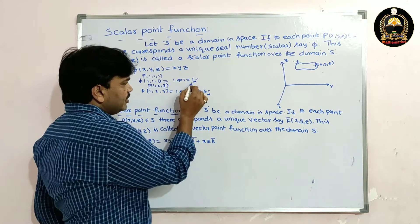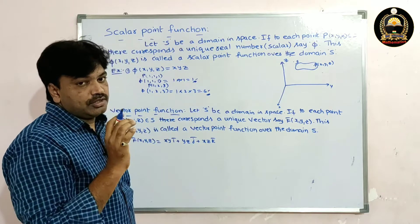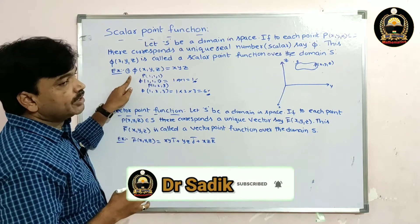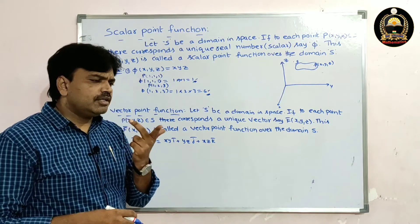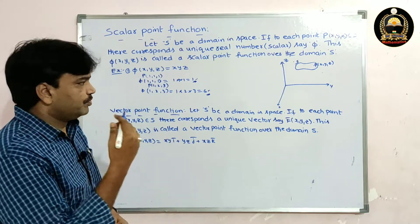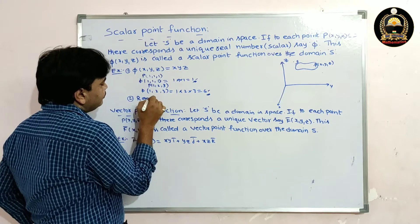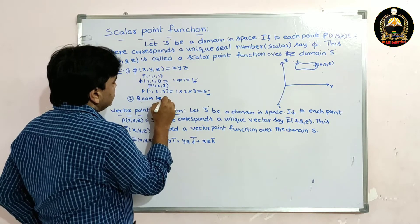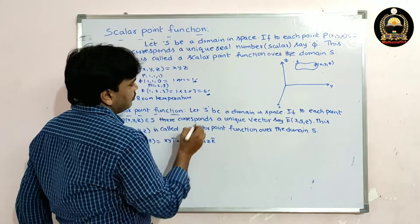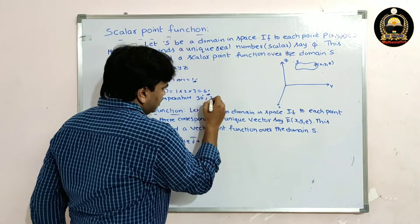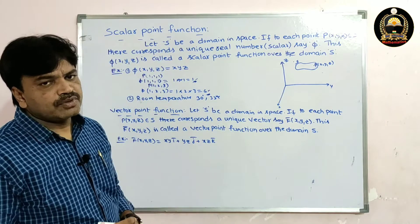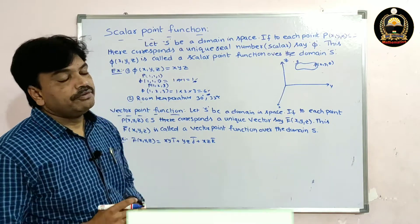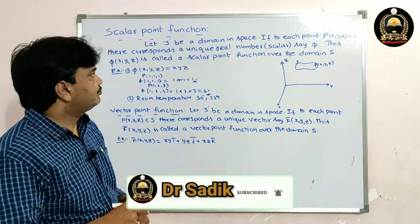This quantity has magnitude but no direction, so it is called a scalar point function. We can observe this in real life — for example, room temperature: at one point it may be 30 degrees centigrade and at another point 32 degrees centigrade. These are examples of scalar point function.